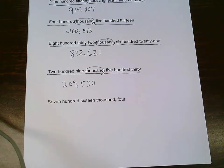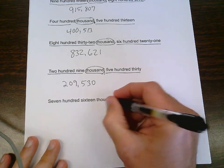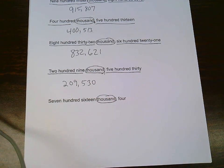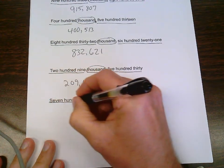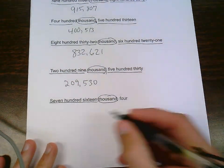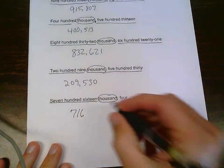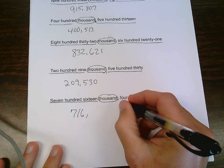And the last one, 716,004. So I look at the comma. The word in front of the comma tells me that it's in the thousands period. And 716 is in the thousands period. And in my ones period, it just says 4.